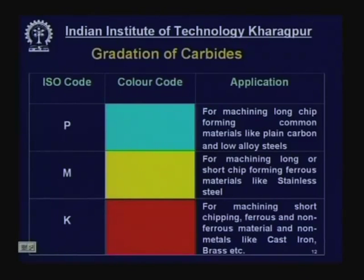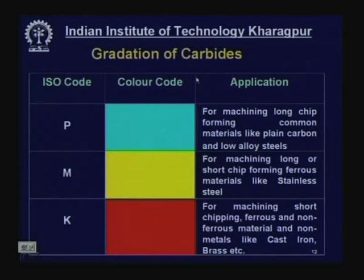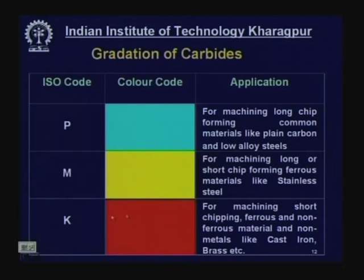Regarding the gradation of carbides: according to ISO, all powder-metallurgy carbide tools are graded into three forms — P, M, and K grades. P is color-coded yellow, M is a mixed grade, and K is another grade. P stands for machining ductile, long-chip-forming common materials like plain carbon steel and low alloy steels.